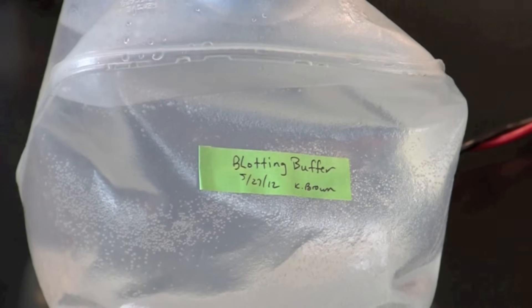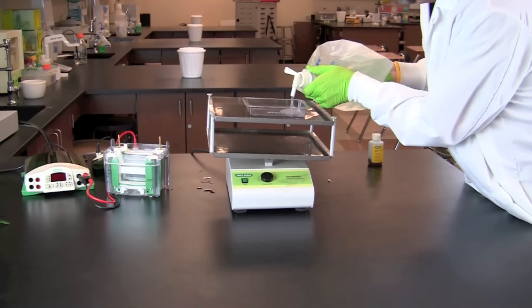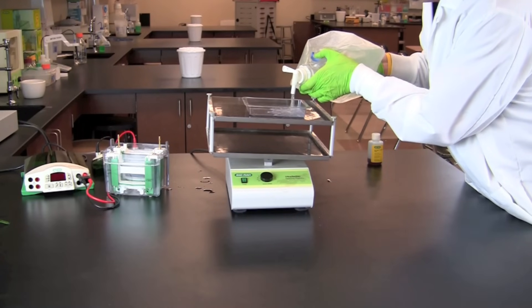First fill a tray with blotting buffer. You will be using this buffer to equilibrate your gel prior to starting the Western blot.